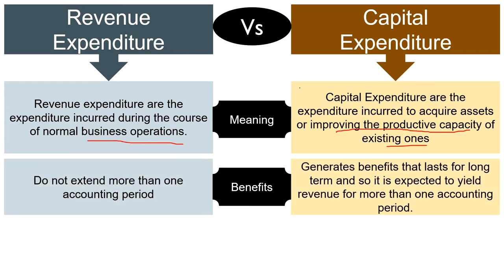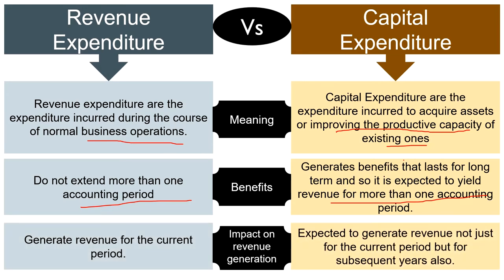When it comes to benefits, revenue expenditure provides benefit in the same financial year in which it is incurred, so its benefits do not extend for more than one accounting period. As against this, capital expenditure generates benefits that last for the long term, and so it is expected to yield revenue for more than one accounting period. Revenue expenditure helps in maintaining the revenue-earning capacity of the business, generating revenue for the current period only, while capital expenditure generates revenue not just for the current period but for subsequent years also.